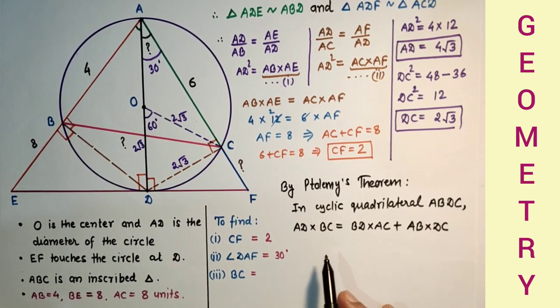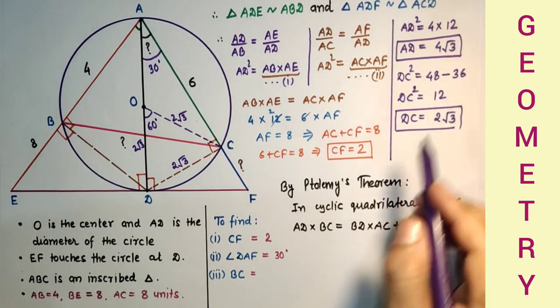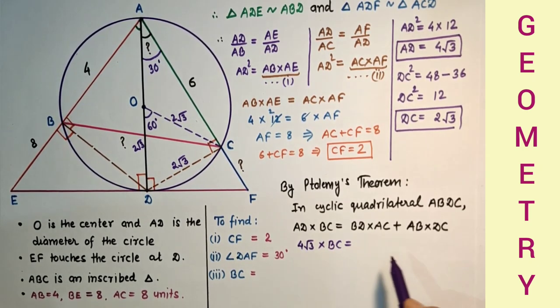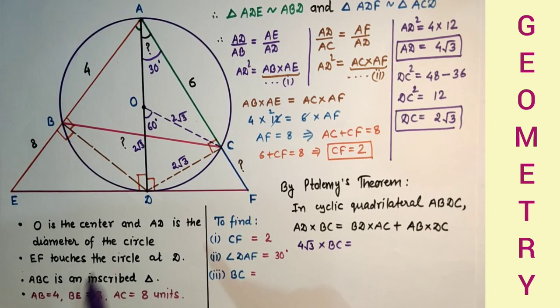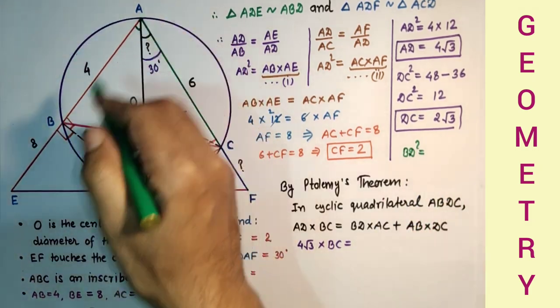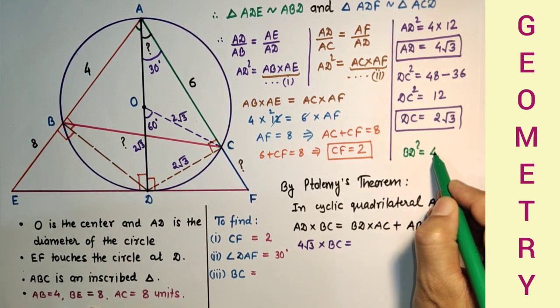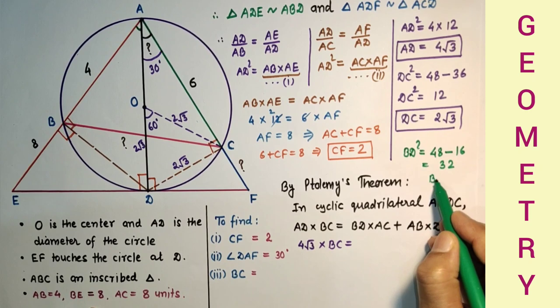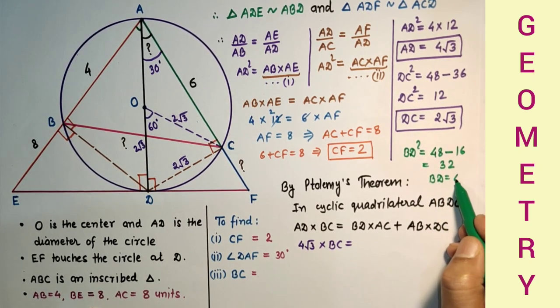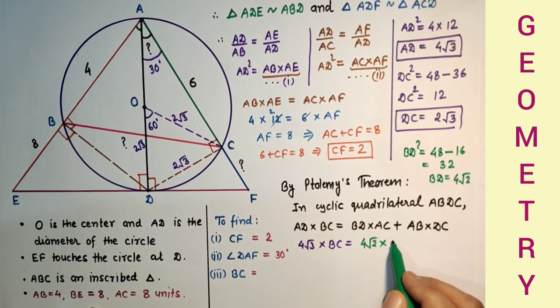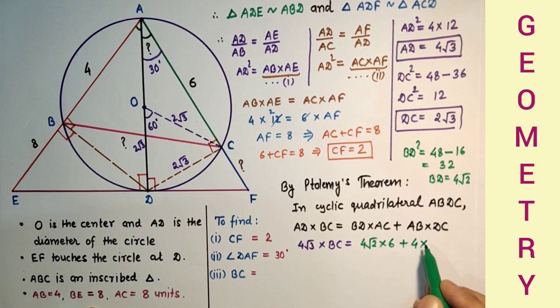Substituting the known values to get BC: AD we found is 4√3. BC we have to find. BD we can find by using BD² = AD² minus AB², so AD² is 48 minus AB² is 16, which is 32. So BD is square root of 32, which is 4√2. So BD is 4√2, AC is 6, AB is 4, and DC we found is 2√3.